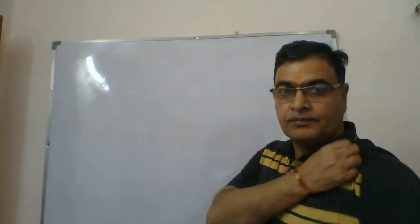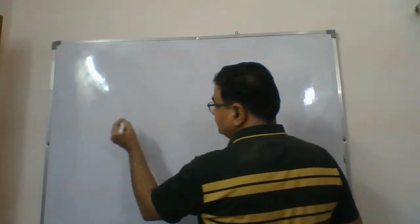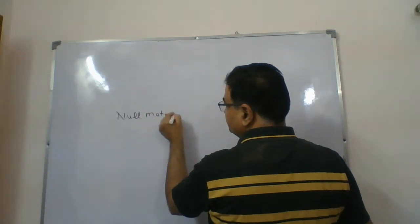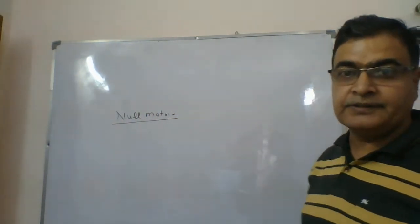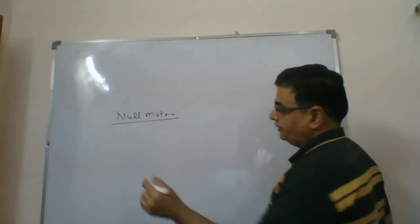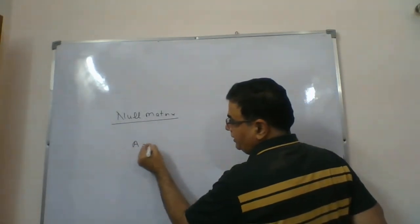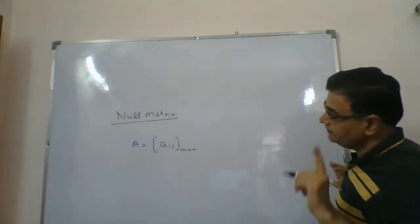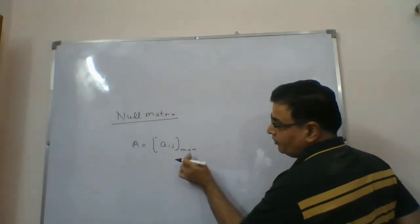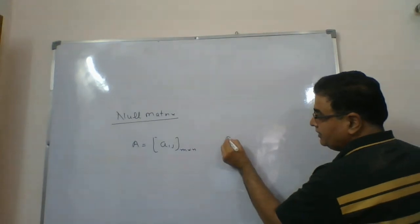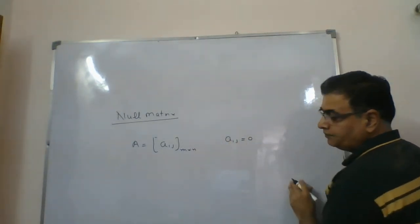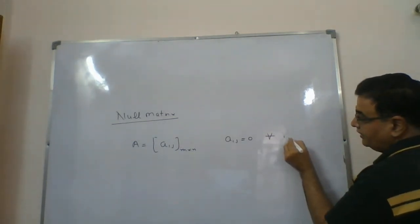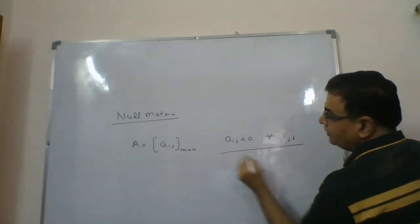Now we will continue with the next topic, that is null matrix. A null matrix is simply a matrix of any order A_ij of order m into n — not necessarily a square matrix, it can be any matrix of order m into n — where each element A_ij is 0 for all i and j. This is called a null matrix.